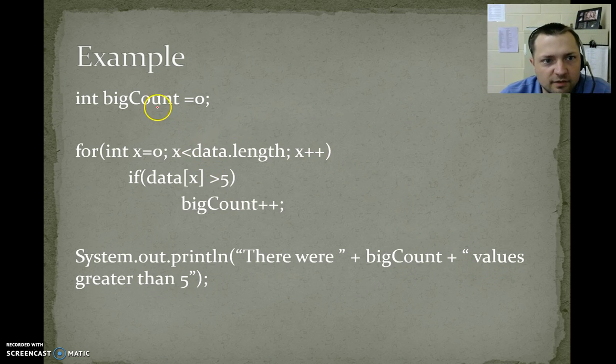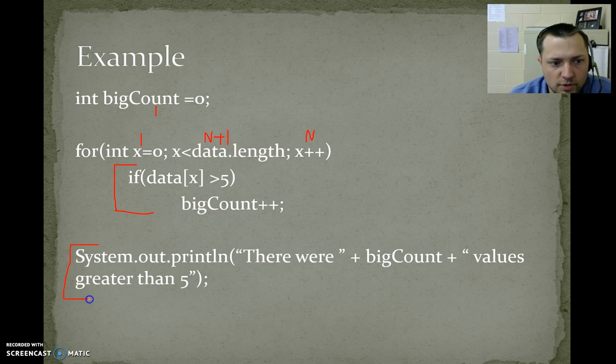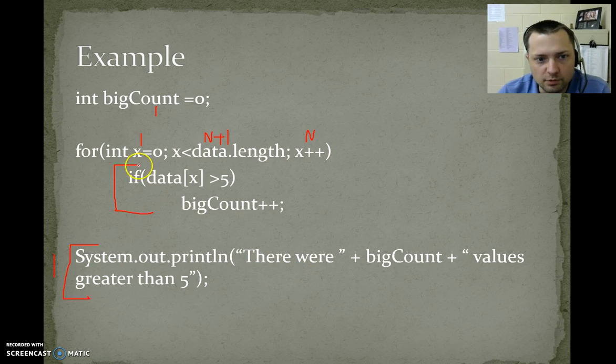So here we have big count. Big count happens one time every time. This happens one time every time. Every time, this happens n plus 1 times. Every time, this happens n times. Now, this is going to vary depending on if we're talking about best or worst. This will always happen one time. This is always n. Every time you enter the loop, we run this check.